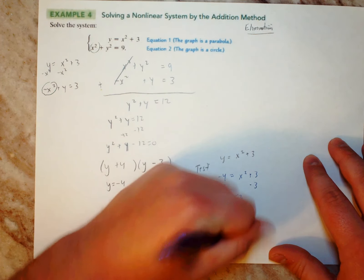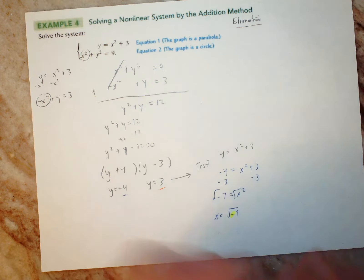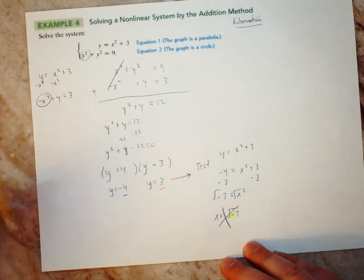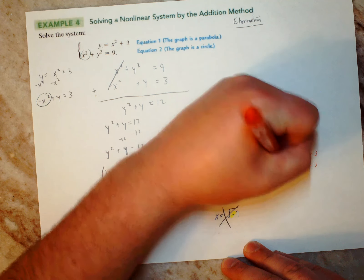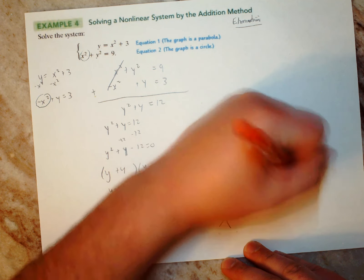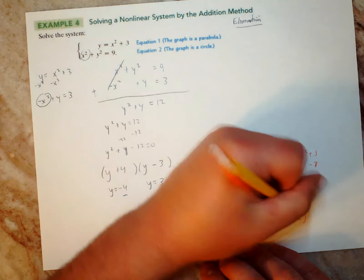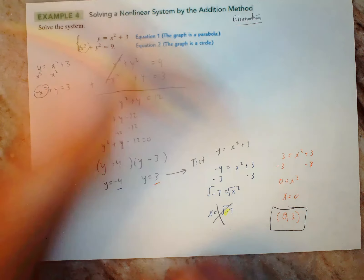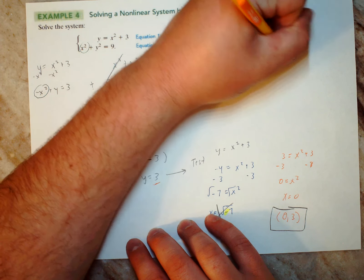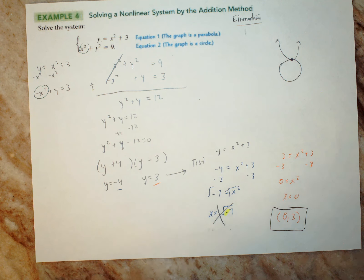Since y = −4 gives a negative under the square root, we discard it. Testing y = 3: 3 = x² + 3, so x² = 0, meaning x = 0. The only solution is (0, 3). This makes sense geometrically — it's a parabola and circle that are tangent, touching at just one point. Your assignment is the four check-in problems from the lesson directions.